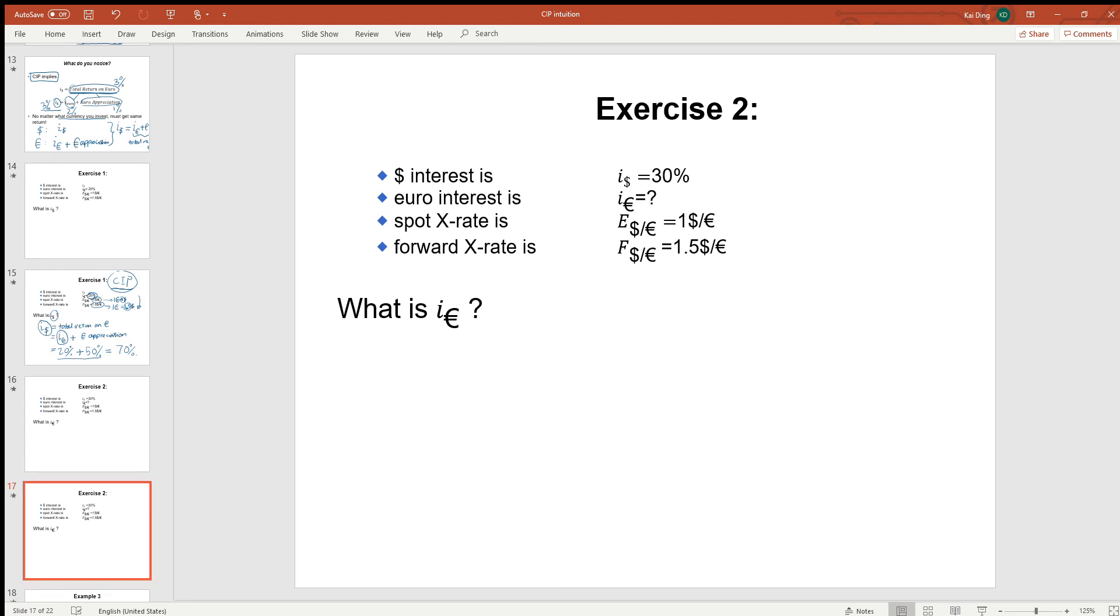Similarly, using our intuition, we can figure out other quantities. Again, CIP intuition says I$ has to be equal to IEUR plus EUR appreciation.